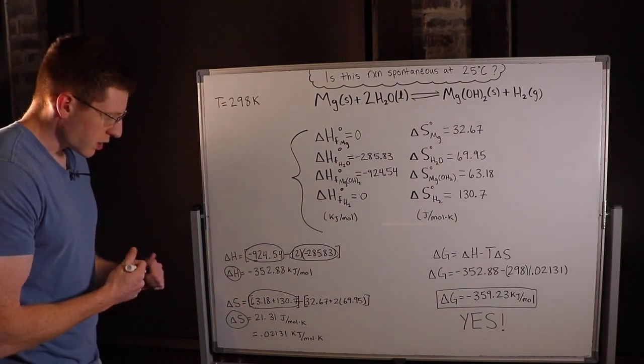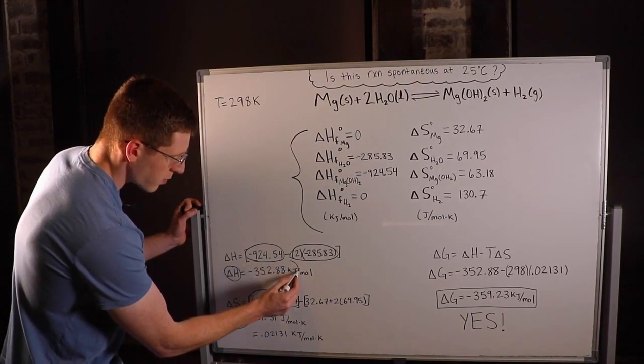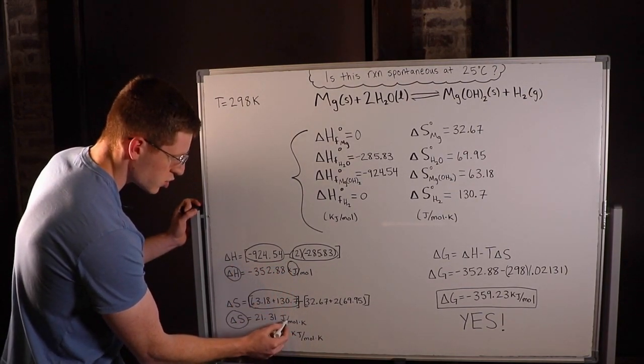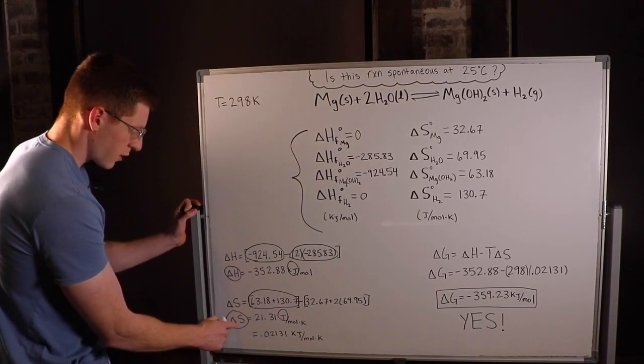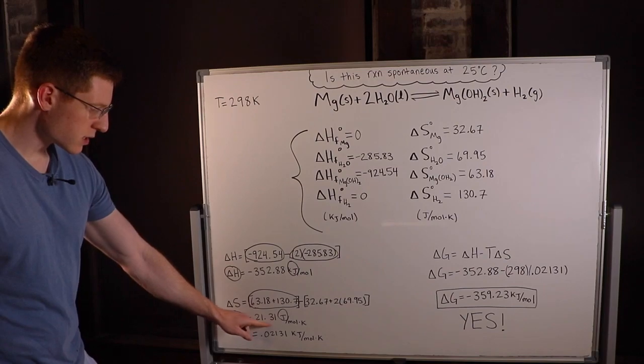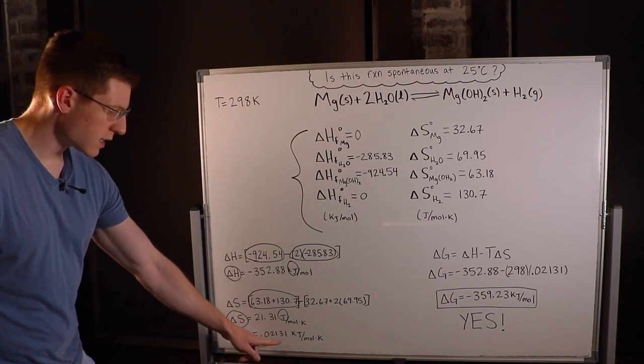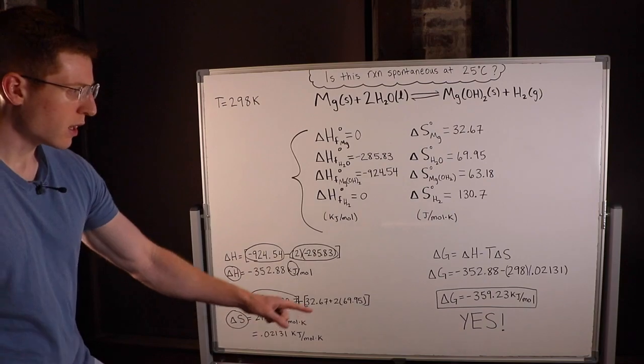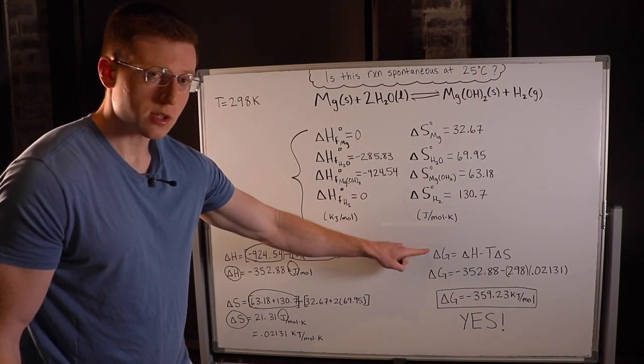Notice we had kilojoules per mole for enthalpy, but now we have joules per mole times Kelvin for entropy. We want those units to match, so I divided this number by a thousand to get kilojoules per mole times Kelvin. Now they match for our equation.